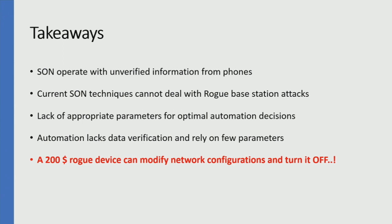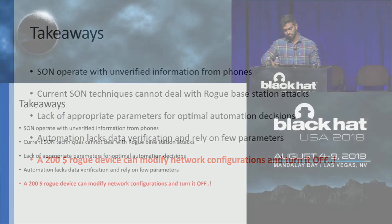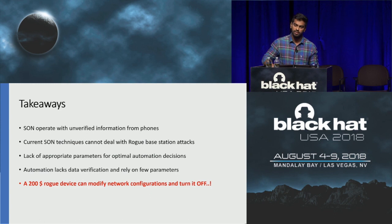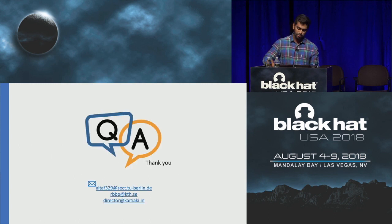Key takeaways: SON is useful and will see huge deployment in 5G, including small cells and heterogeneous deployments. But we must fix the core flaw — unverified information collected from different sources being used blindly to make network decisions. Network configuration changes shouldn't be based on a single parameter like a cell ID. A $200 rogue base station can modify network configurations and in certain cases turn a base station off. This is being handled in the mobile network community.